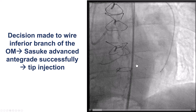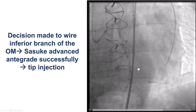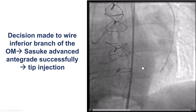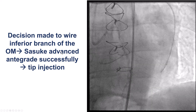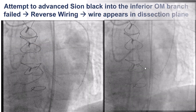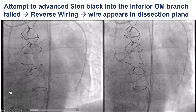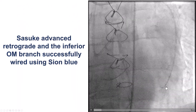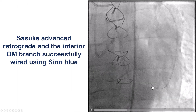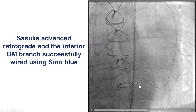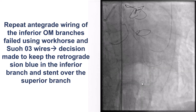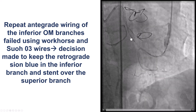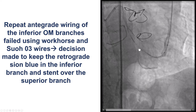The question then was how to deal with stenting. We wanted to wire the side branch, but despite using a Sasuke dual lumen microcatheter, we were unable to wire into the distal branch after multiple attempts. We used the reverse guide wire technique but it did not go in the right place. We ended up advancing a retrograde guide wire into the inferior branch of the obtuse marginal, but could not go antegrade. Eventually we decided to leave the retrograde wire there for safety and stent across over the superior branch wire.